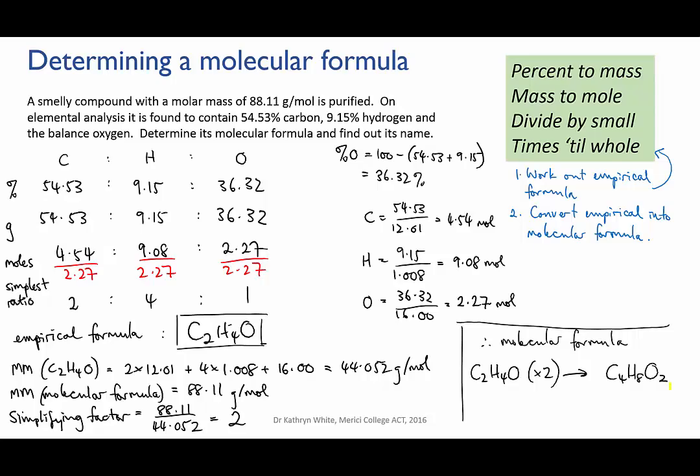And that gives me a molecular formula of C4H8O2, which you'll find, if you hunt around, is the formula for butyric acid, which is found in rancid butter and parmesan cheese and charmingly vomit.